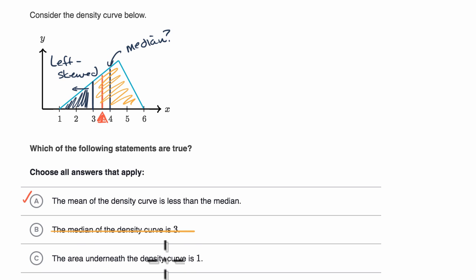The area underneath the density curve is one. Pause this video, is that true? Yes, this is true. The area underneath any density curve is going to be one. If we look at the total area under the curve, it's always going to be one.